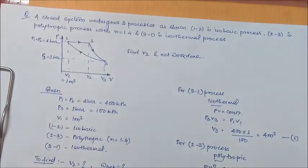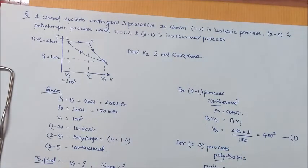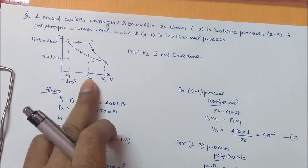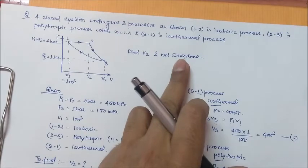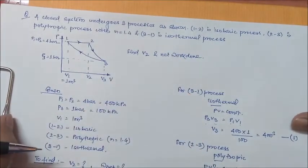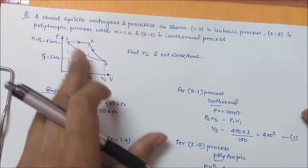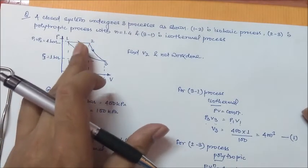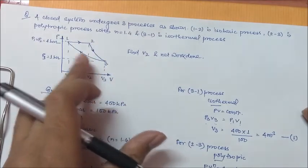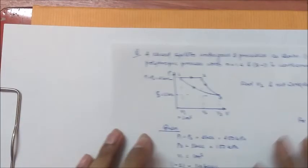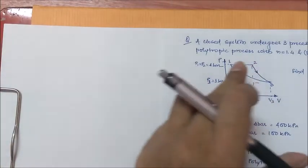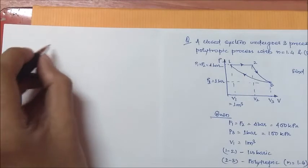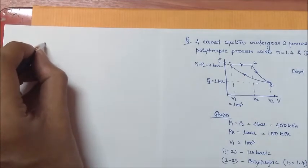Now, see in the question V2 we have to find out. Now, the next thing we have to find out is the net work done. For that, we will sum up all the work done by the system going through each process. I will put this sidewise so that we can use the figure while solving the question.